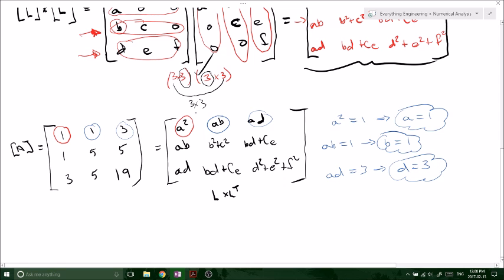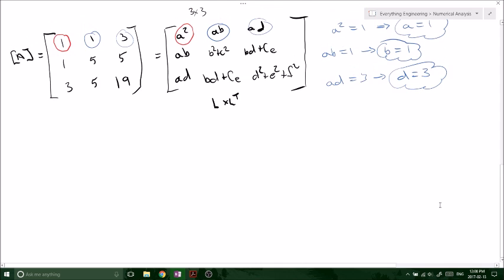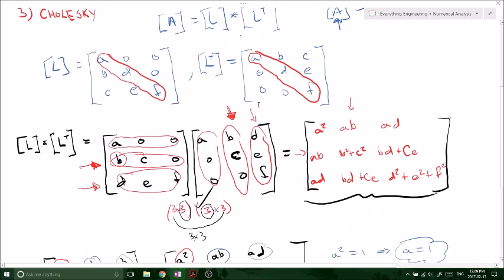You do that for every component and eventually you're going to get the following values. When you do all that you get a and b equal one, b is one, d is three, c is two, e is one, f is three.